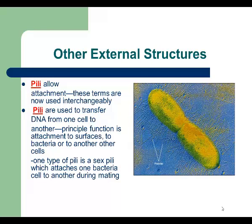The next external structure is pili. Pili are hair-like structures that extend from the surface of the cells, and their main function is attachment. Most gram-negative bacteria have pili; many gram-positive bacteria do not. Pili are made of protein. This semester we will also talk about sex pili, which have different functions and are used for communication between bacteria.